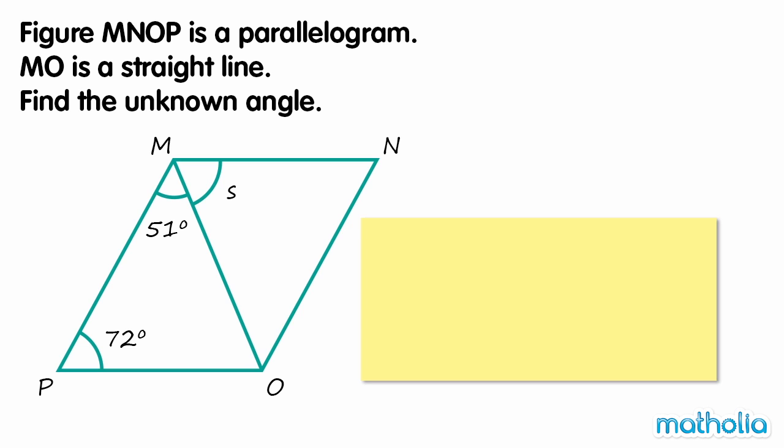We know that the sum of 72 degrees, 51 degrees, and angle S must be 180 degrees.